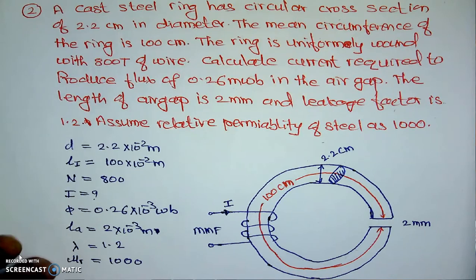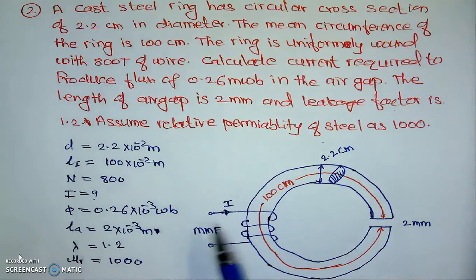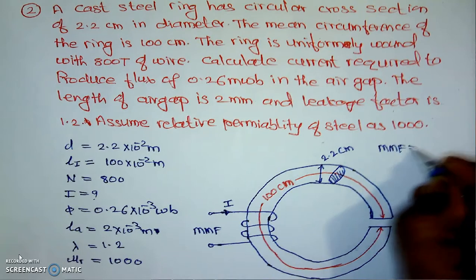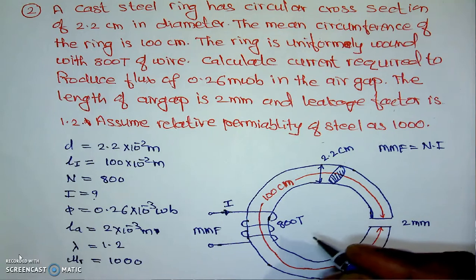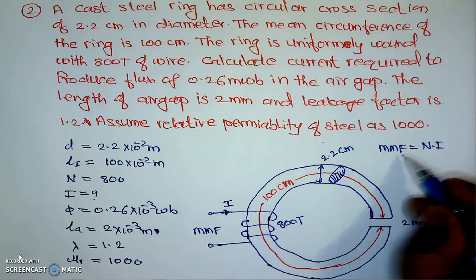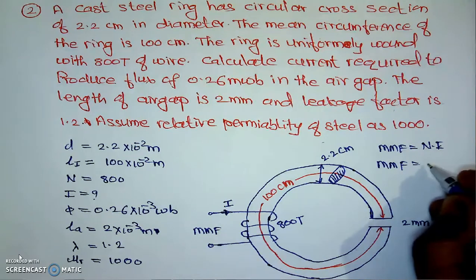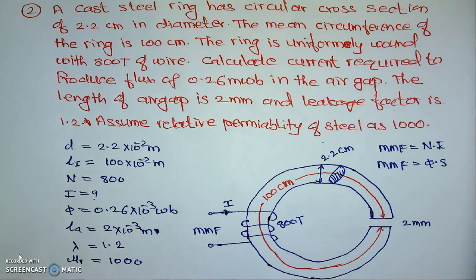From the given data, we want to calculate the current I. We need to use the formula for MMF. MMF has two formulas: the first is MMF = N × I, where N is the number of turns (800) and I is the current. To find I, we first need to calculate the MMF using the second formula: MMF = φ × S, where φ is the flux in Weber and S is the reluctance in ampere-turns per Weber.